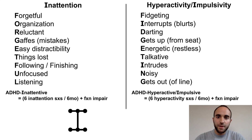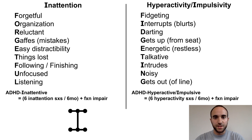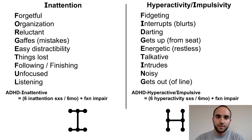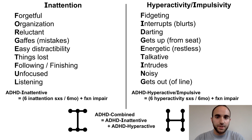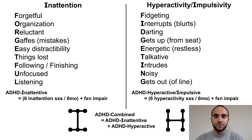To meet criteria for the hyperactive-impulsive subtype of ADHD, similarly to the inattentive subtype, a patient must have at least six of these symptoms for six months associated with functional impairment. To remember that six symptoms are required, you can visualize the letter H in hyperactivity, which has six points as shown here. There is also a combined subtype of ADHD, which simply involves meeting the criteria for both the inattentive and hyperactive subtypes.